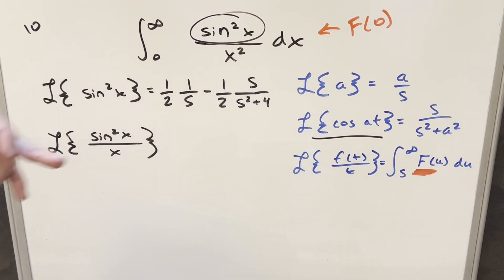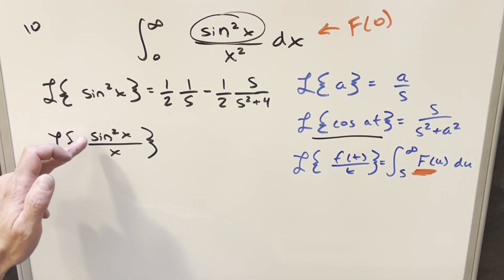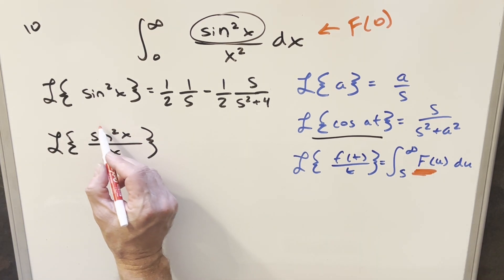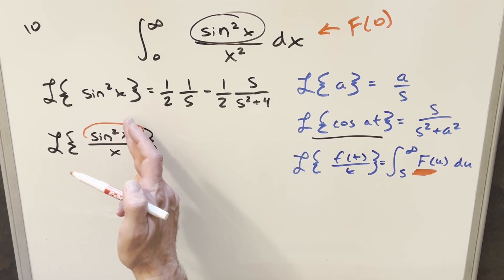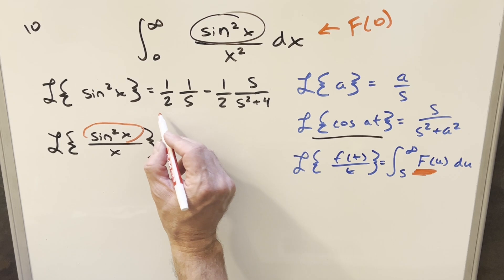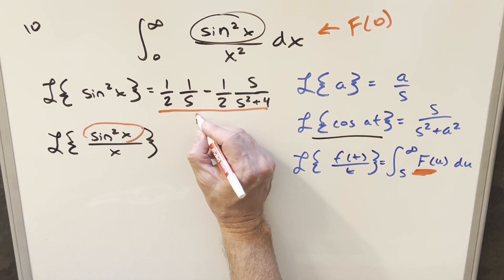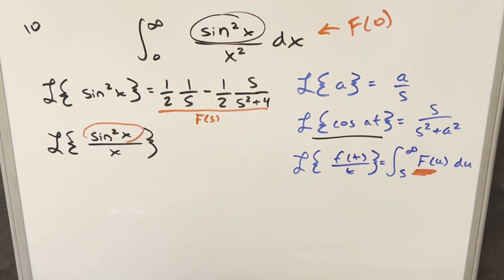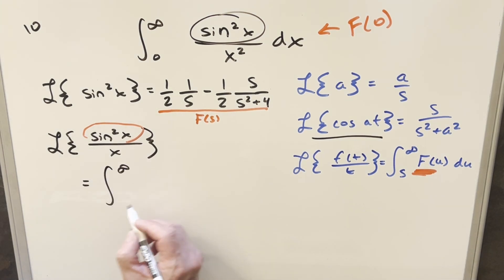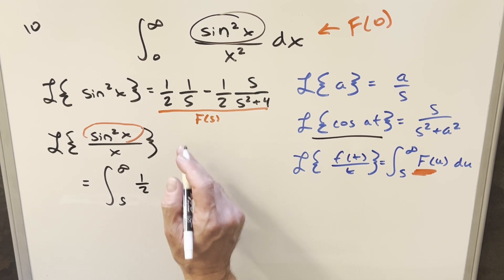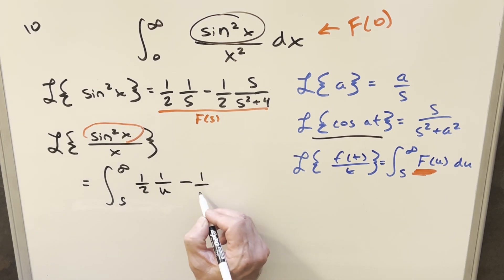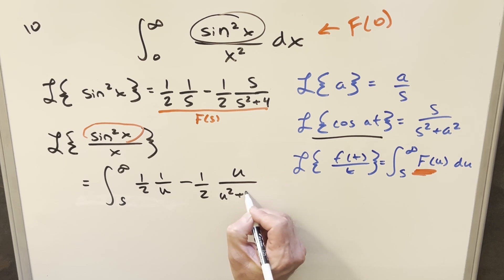Now for the next step, we need the Laplace transform of sin²x / x using the division-by-t formula. In this formula, sin²x plays the role of f(t), so the big F(u) is the Laplace transform we just found. Using the formula, we have the integral from s to infinity of: (1/2)(1/u) − (1/2)(u / (u² + 4)) du, with the variable changed to u.